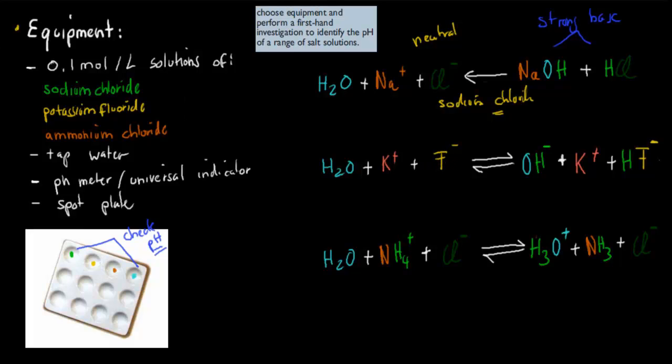because potassium hydroxide is a strong base, the conjugate acid, which is our potassium ion, is a very weak conjugate acid. So it's going to be very unlikely for it to donate anything. Whereas on the other hand,